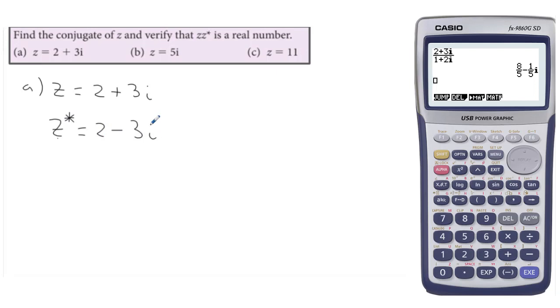So we'll be asked to find the conjugate and verify that z times the conjugate of z is a real number. So if that's z and that's the conjugate of z, then z z conjugate is going to equal 2 plus 3i times 2 minus 3i. So just in the same way with surds and the radical conjugates, you've got a difference of 2 squares. So this is going to be 2 squared minus 3i squared.